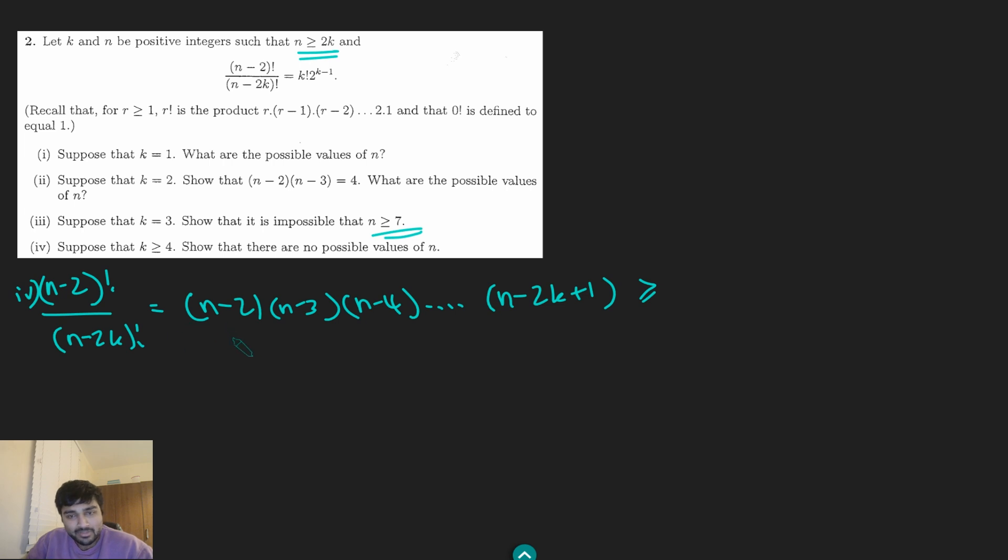Well, I get 2k - 2, 2k - 3, 2k - 4, and so on, all the way down to 2k - 2k + 1, which is 1. And so this is at least (2k - 2)!. And this is in fact true for all values of k, but in particular when k is at least 4. So this thing here is at least the bare minimum of (2k - 2)!.